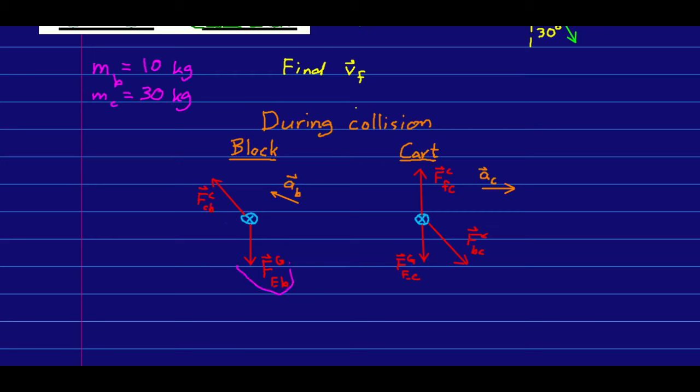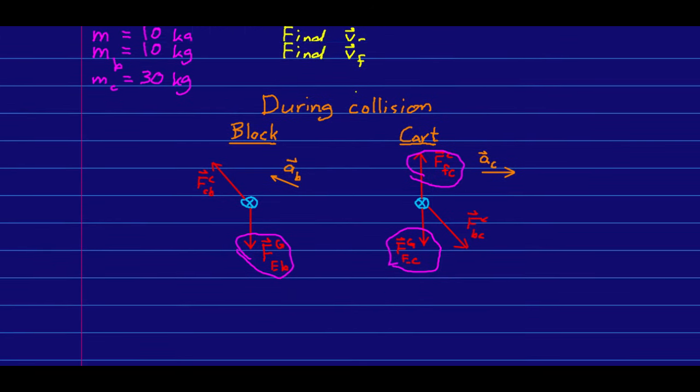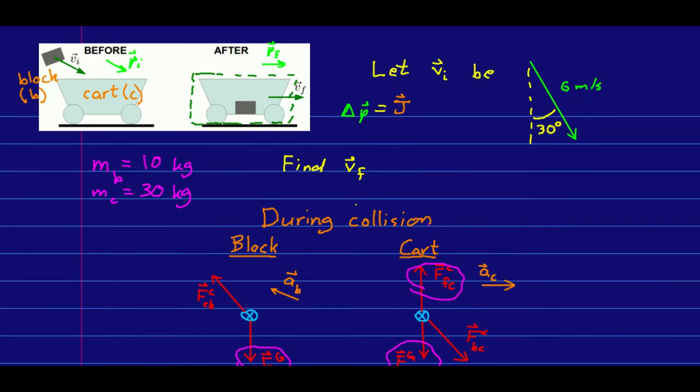That's everything except the forces that the cart and the block exert on each other. We have these two gravitational forces and we have the force due to the floor on the cart. And because the cart is on wheels, we don't expect much friction. And so that force should be roughly vertical. That means that all of our external forces are vertical.